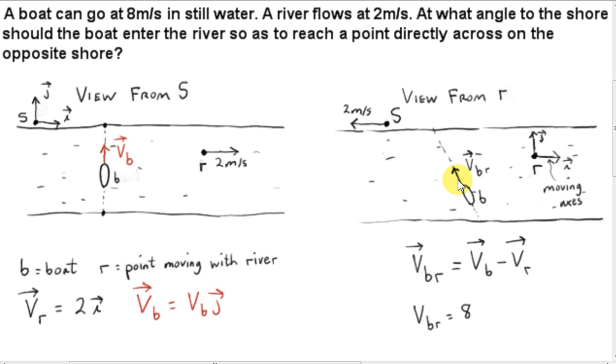Now, we are told that the boat moves in such a way that if the water appears to be still, the speed of the boat is 8 meters per second. From the point of view of R, a point moving with the water, the water is still. The water appears to be still. So the boat is moving with a speed of 8. So that's what we mean by a boat can go. So from the point of view of an object moving in the river, with the river, the speed of the boat is 8 meters per second.